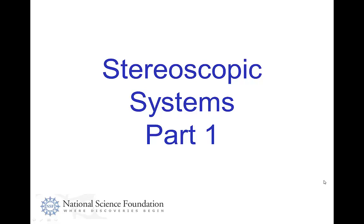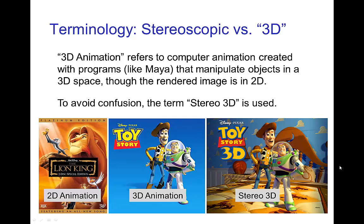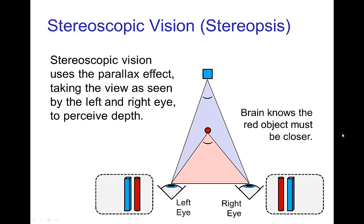Stereoscopic Systems, Part 1. Let's start with a bit of terminology. 3D animation refers to computer animation that's generated with programs that manipulate objects in a 3D space. This type of computer animation normally renders images in 2D. But the general public, when they think of 3D, they're thinking of 3D stereoscopic films. So to avoid confusion with this terminology, we'll use the term stereo 3D or stereoscopic 3D when we're referring to movies with stereoscopic view.